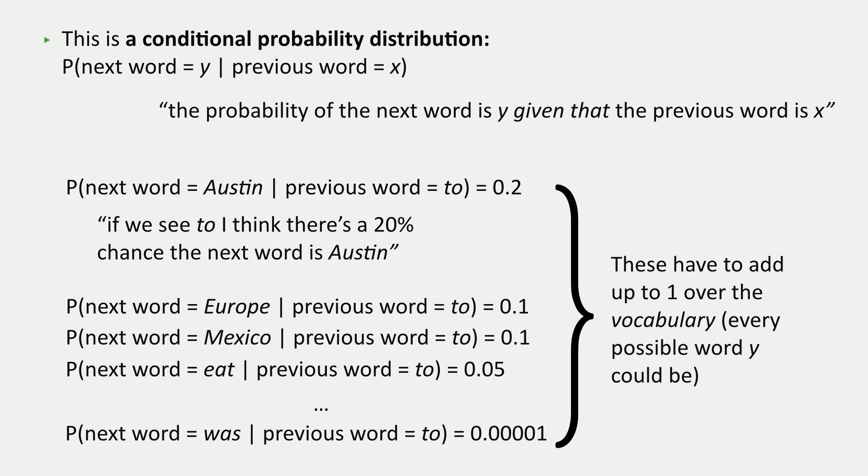So given that we see the word to, we need to fully specify, like for every single word, what is the probability of it coming next?